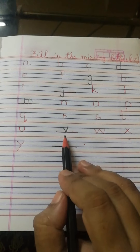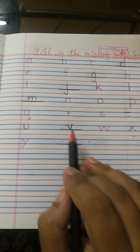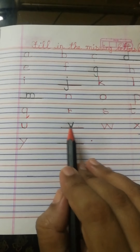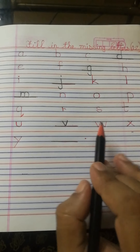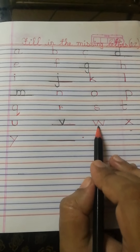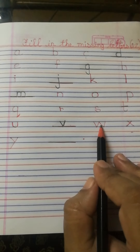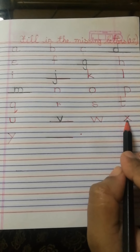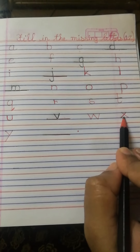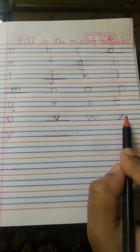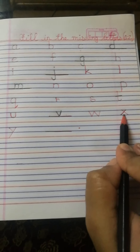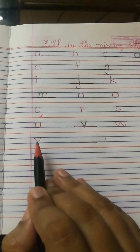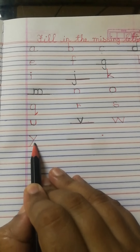Children, small v ke baad kaunsa letter aata hai? Which is the next letter? Small w. After small w, which letter will come? Small x. After small x, which letter will come? Small y.